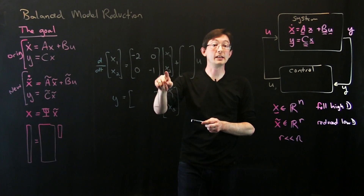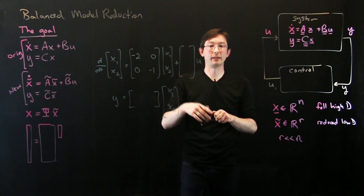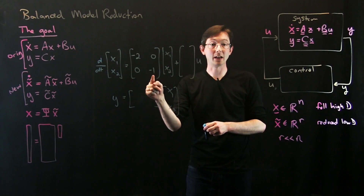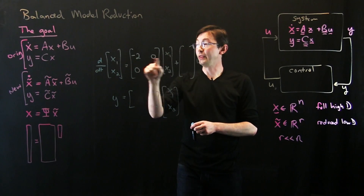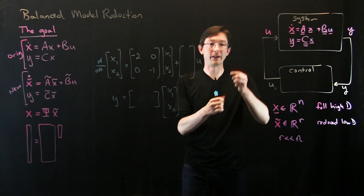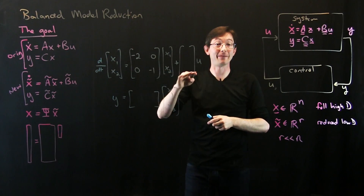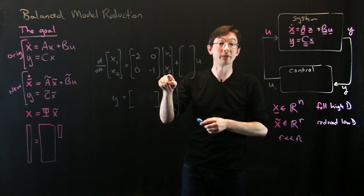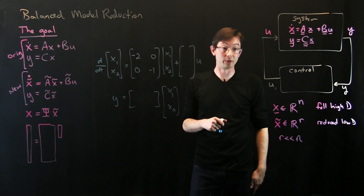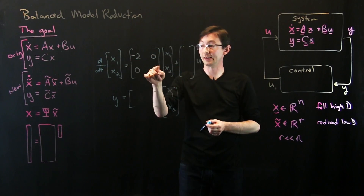My naive reasoning: if I started with x₁ = x₂ = 1, the x₁ dynamics decay faster than x₂, so x₂ sticks around longer. I'd reduce the system by killing x₁ and keeping only x₂, writing ẋ₂ = -x₂, because it has the more lightly damped eigenvalue. For many systems, however, that intuition is wrong.